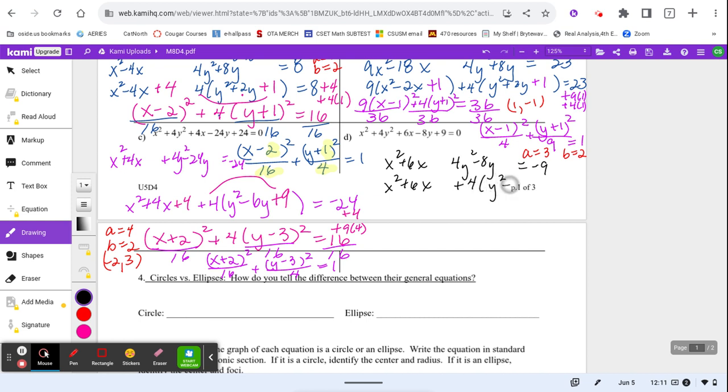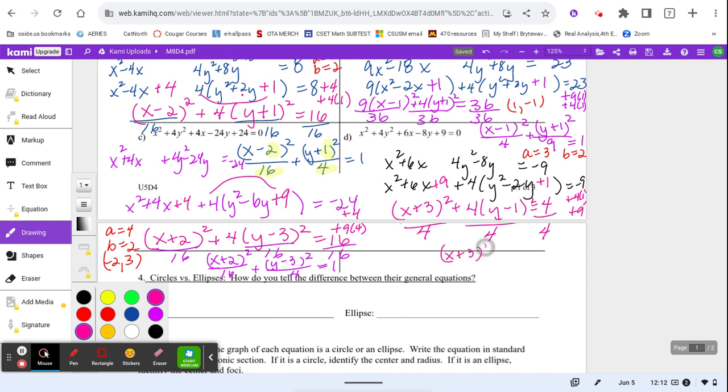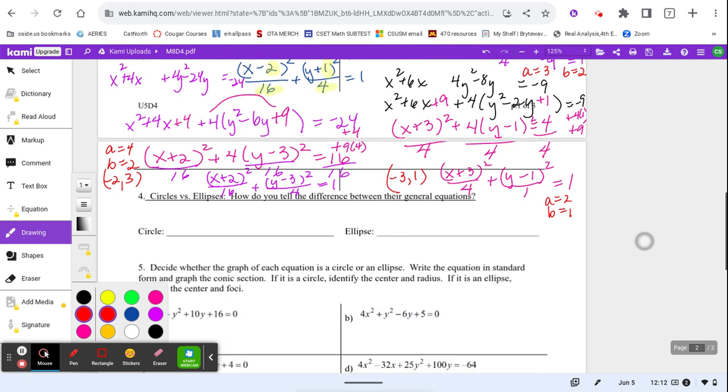Alright, if you haven't yet, pause the video and try this last one yourself. Okay. So X plus 3 squared perfect. 9 minus 9 is 0 equals 4. I want this to be over 1, so we're dividing everything by 4. And we get X plus 3 squared over 4, Y minus 1 squared over invisible 1 equals 1. Now I'm able to get my center, my A and my B. And I'm done.